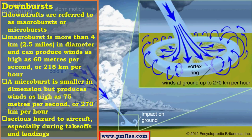Downbursts are the exact opposite of tornadoes. In tornadoes we have updrafts which occur at a very violent pace, whereas downbursts involve violent wind movement formed due to downdrafts. These downdrafts influence the climates of tropical regions such as Indonesia and surrounding regions. They are very serious hazards to air navigation and lead to accidents during takeoff and landing of aircraft.